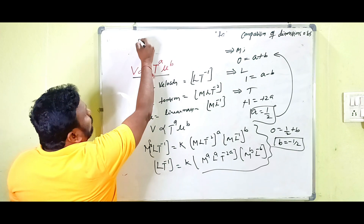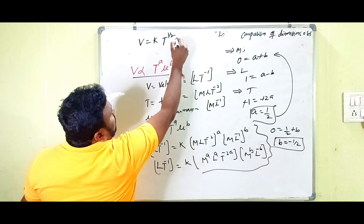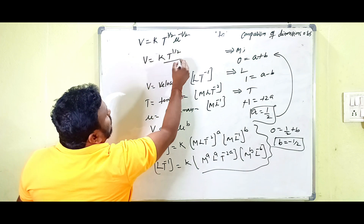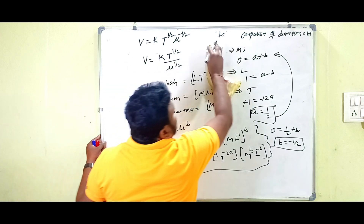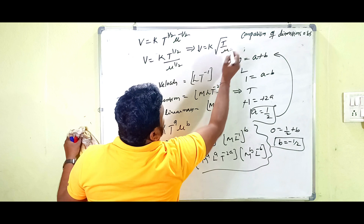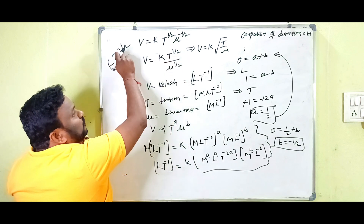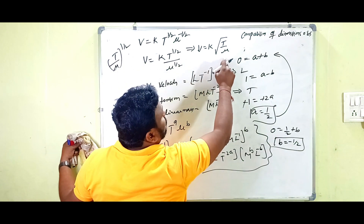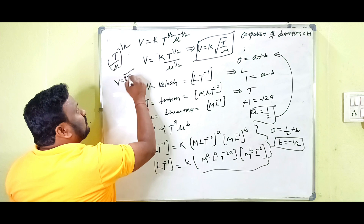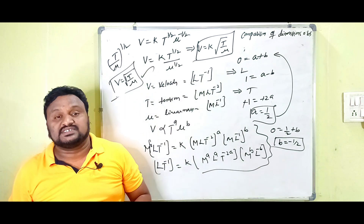Substituting a equals 1/2 and b equals −1/2 back: v equals k · T^(1/2) · μ^(−1/2), which gives v equals k · √(T/μ). Since k is experimentally proved to be 1, we get v equals √(T/μ). This is the expression for velocity of transverse wave derived using dimensional analysis.